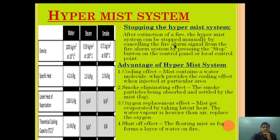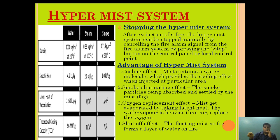After the extinction of the fire, the Hypermist system can be stopped manually by turning off the pump, or by cancelling the fire alarm signal from the fire alarm system, or by pressing the stop button on the control panel or local point. Once the fire is extinguished, we press the button on the local or main control panel and the pump stops and water injection stops.